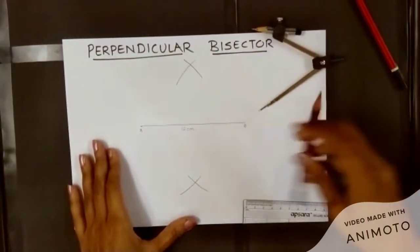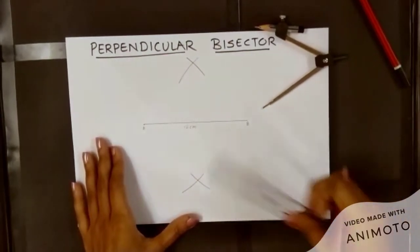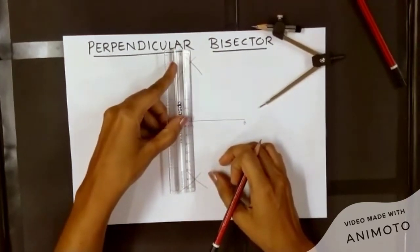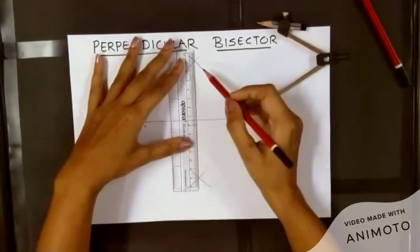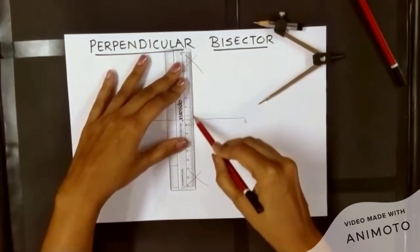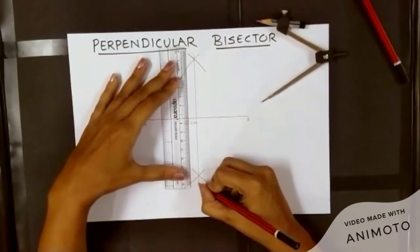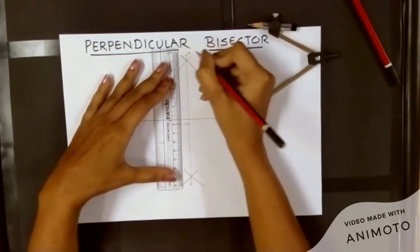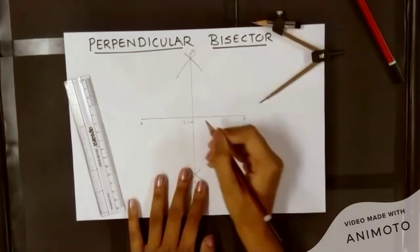After both arcs intersect, you get the intersecting points. Just highlight them a little bit. Take a ruler and join these two points very carefully to complete your construction of the perpendicular bisector. You have to be very careful so that your line is a perfect perpendicular bisector. Once you draw this line, you can label it with any letter. I am labeling this line as M.